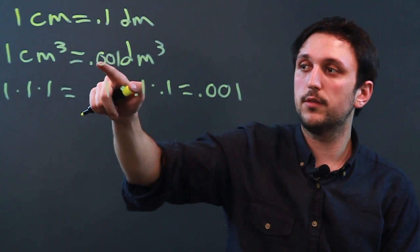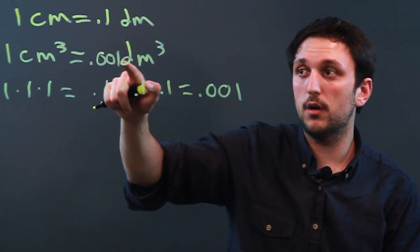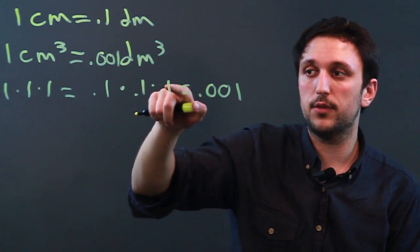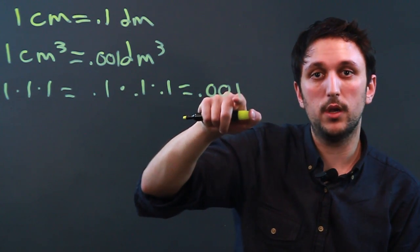So this is one-one-thousandth of a decimeter cubed, because one-tenth times one-tenth times one-tenth equals one-one-thousandth.